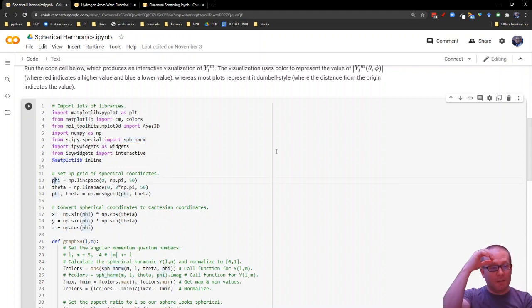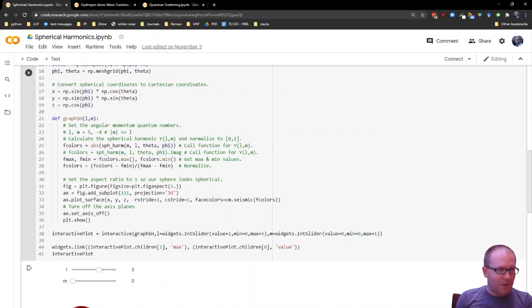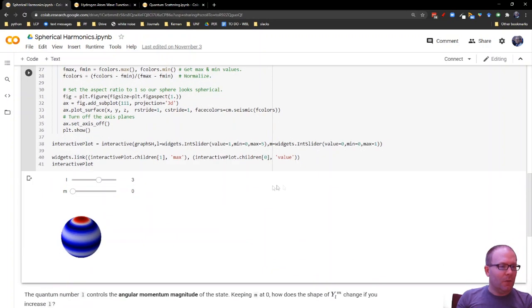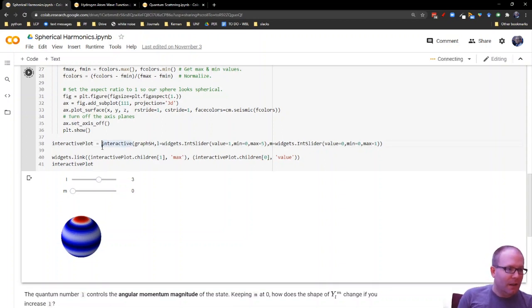In order to visualize these things, we're going to set up a grid of spherical coordinates - phi and theta, latitude and longitude. We're going to convert those into Cartesian coordinates because that's the only thing Matplotlib can understand in 3D. And here we're making a function called graph spherical harmonic. In particular, we're going to be looking at the absolute value of the spherical harmonics - their modulus. Remember, these are complex values with a real part, an imaginary part, and then a modulus that gives you an idea of how large that value is. And those values are going to be color coded.